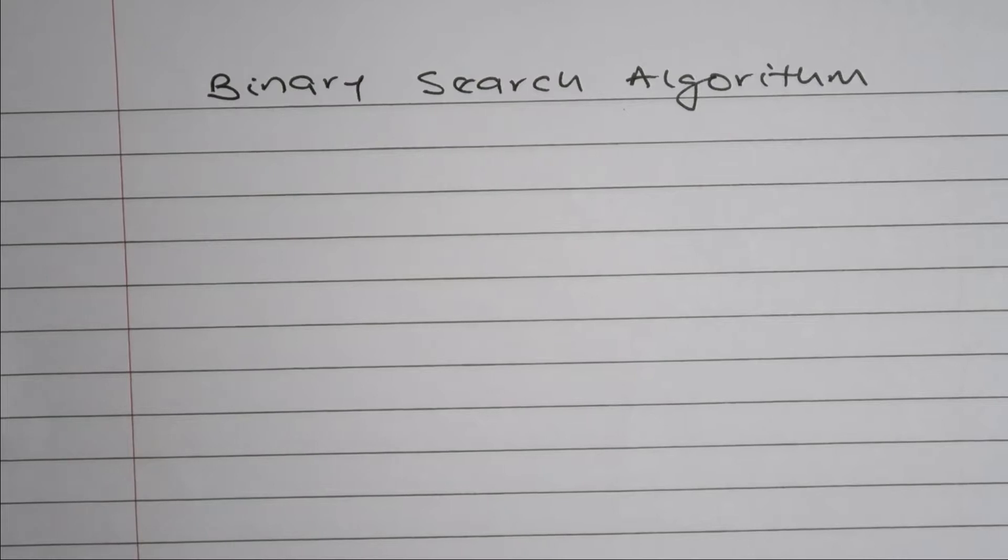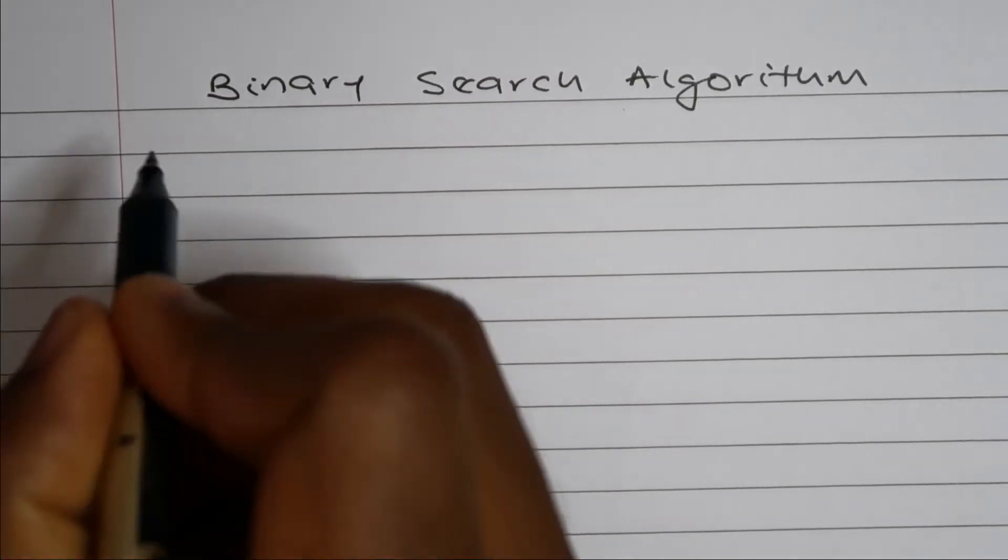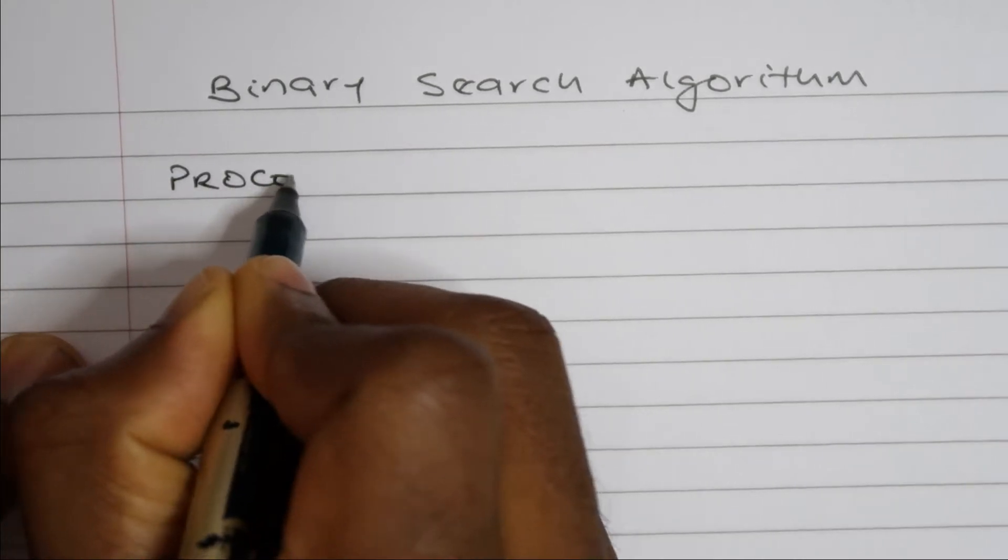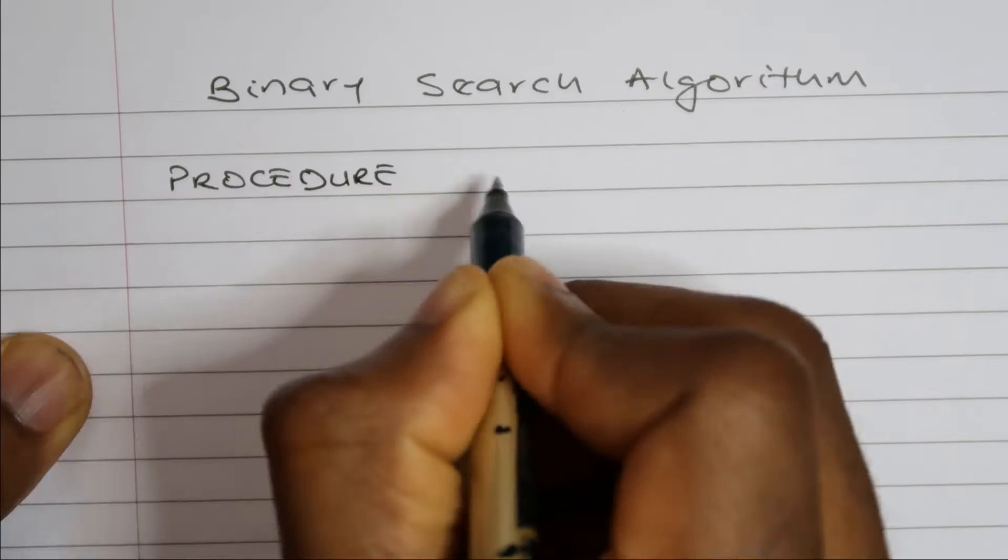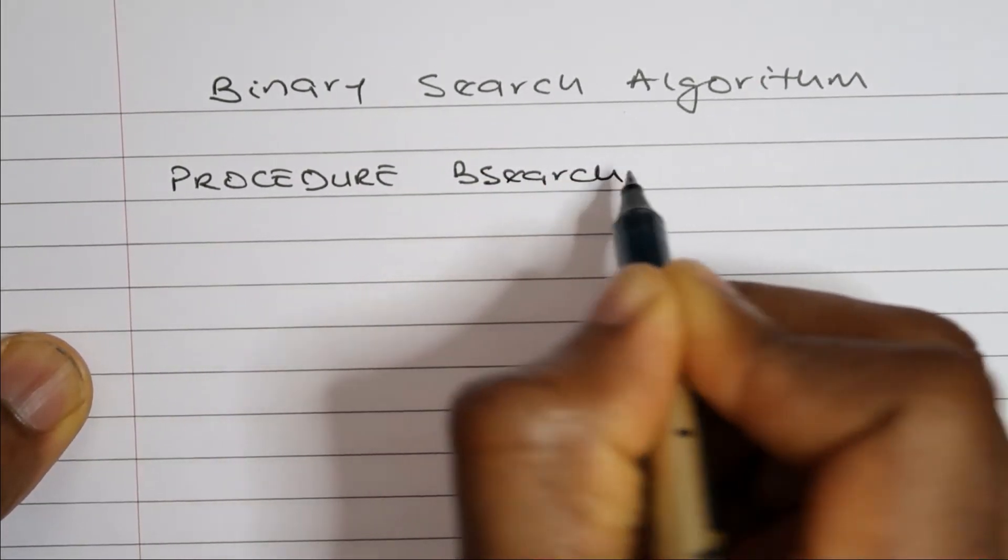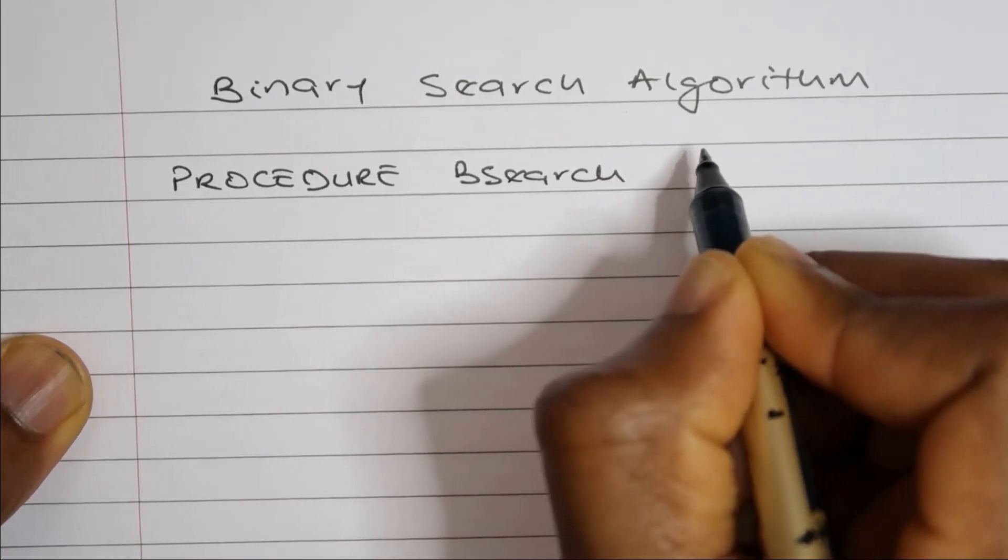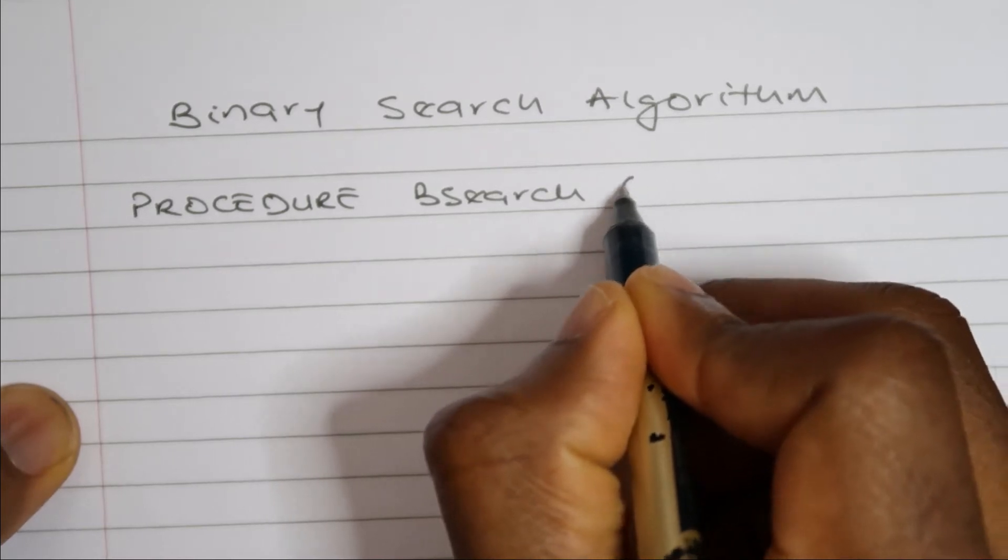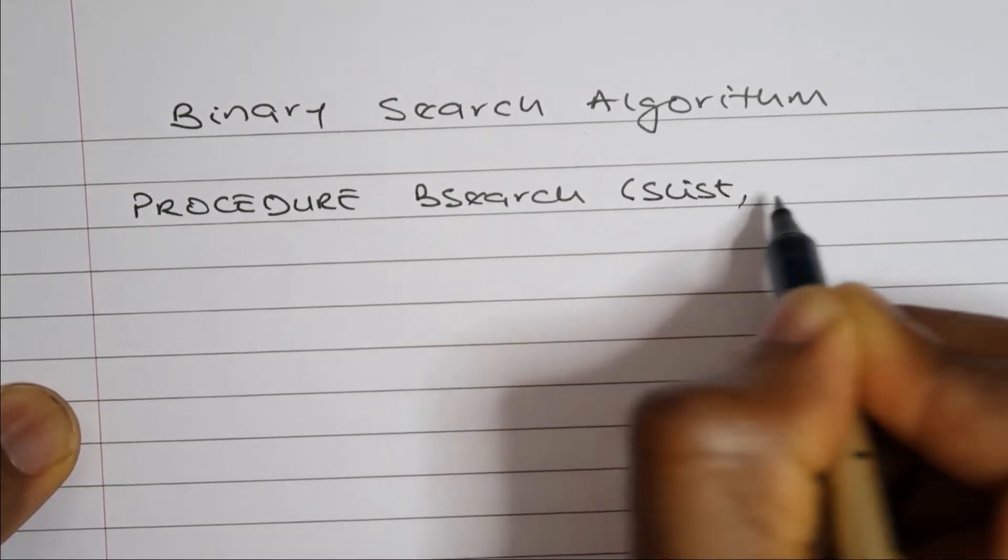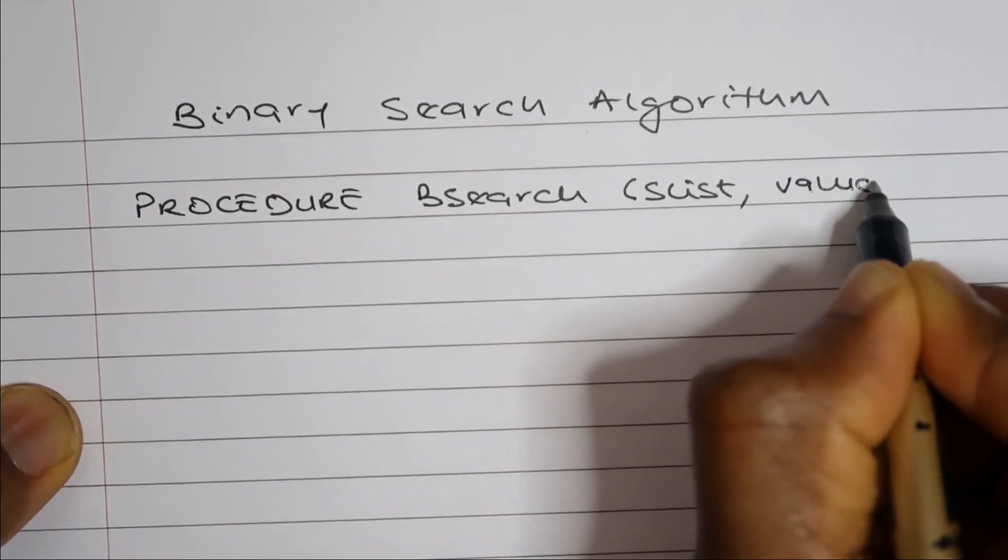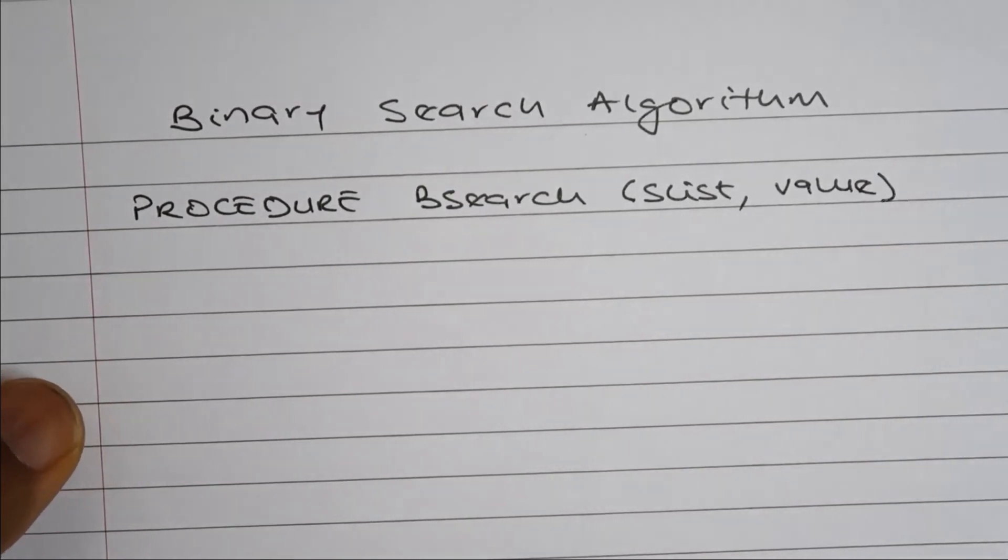So to begin the algorithm, I'll start off by creating a procedure. I'll call my procedure BSearch. The B there just means binary. And my procedure will take in two arguments: SList, which is the list that may contain the value that I'm looking for, and value.